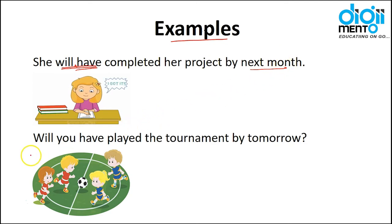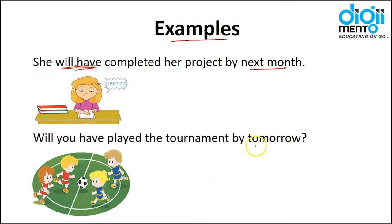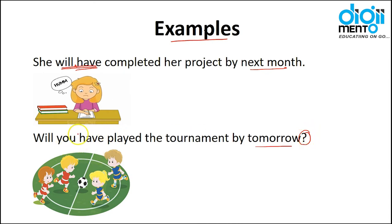'Will you have played the tournament by tomorrow?' — by tomorrow will you have finished playing your tournament? This is an interrogative sentence. Positive: 'You will have played the tournament by tomorrow.' Negative: 'You won't have played the tournament by tomorrow.'